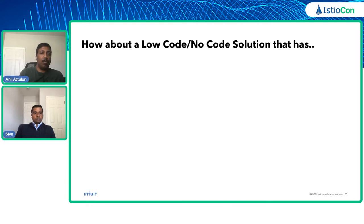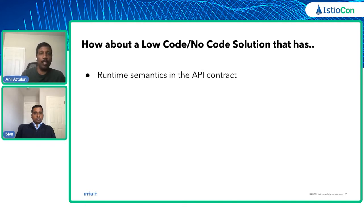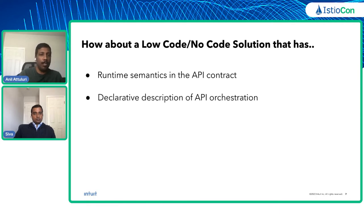Having seen these patterns over the last five years, and with recent advancements in our infrastructure and Istio service mesh spanning hundreds of Kubernetes clusters, we were creating a low code, no code solution that has runtime semantics written into the API contract instead of building it into the business logic or orchestration layer. You have runtime semantics defined as part of the API contract, and you can declaratively describe this API orchestration instead of it being some sort of configuration or code written into your orchestration layer.